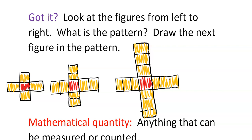Looking at Got It #1: each figure starts with a red square in the middle — that stays constant. If you look at the number of yellow squares going out from each side, in the first figure you have one yellow square on each side, in the second you have two yellow squares on each side, and in the third you have three. So in the next one, we'd expect four yellow squares on each side.